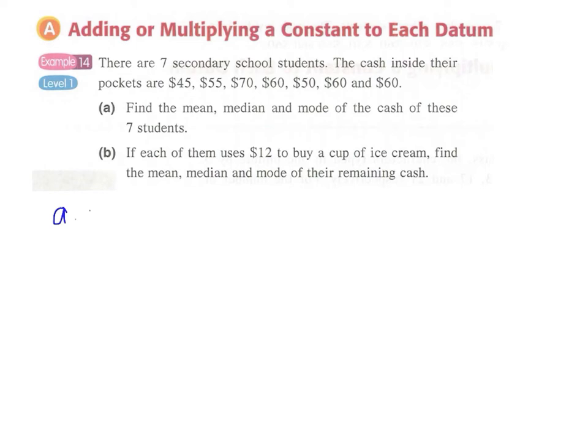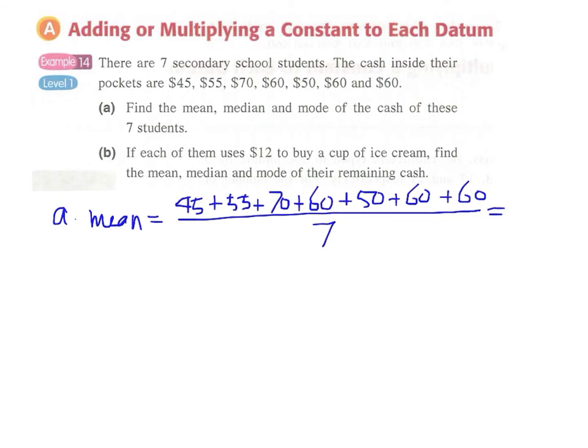And therefore for part a mean, we simply add up all those numbers 45 plus 55 plus 70, 60 and so on. Sum up all these and then divide it by seven and by using our calculator the answer is $57.1.